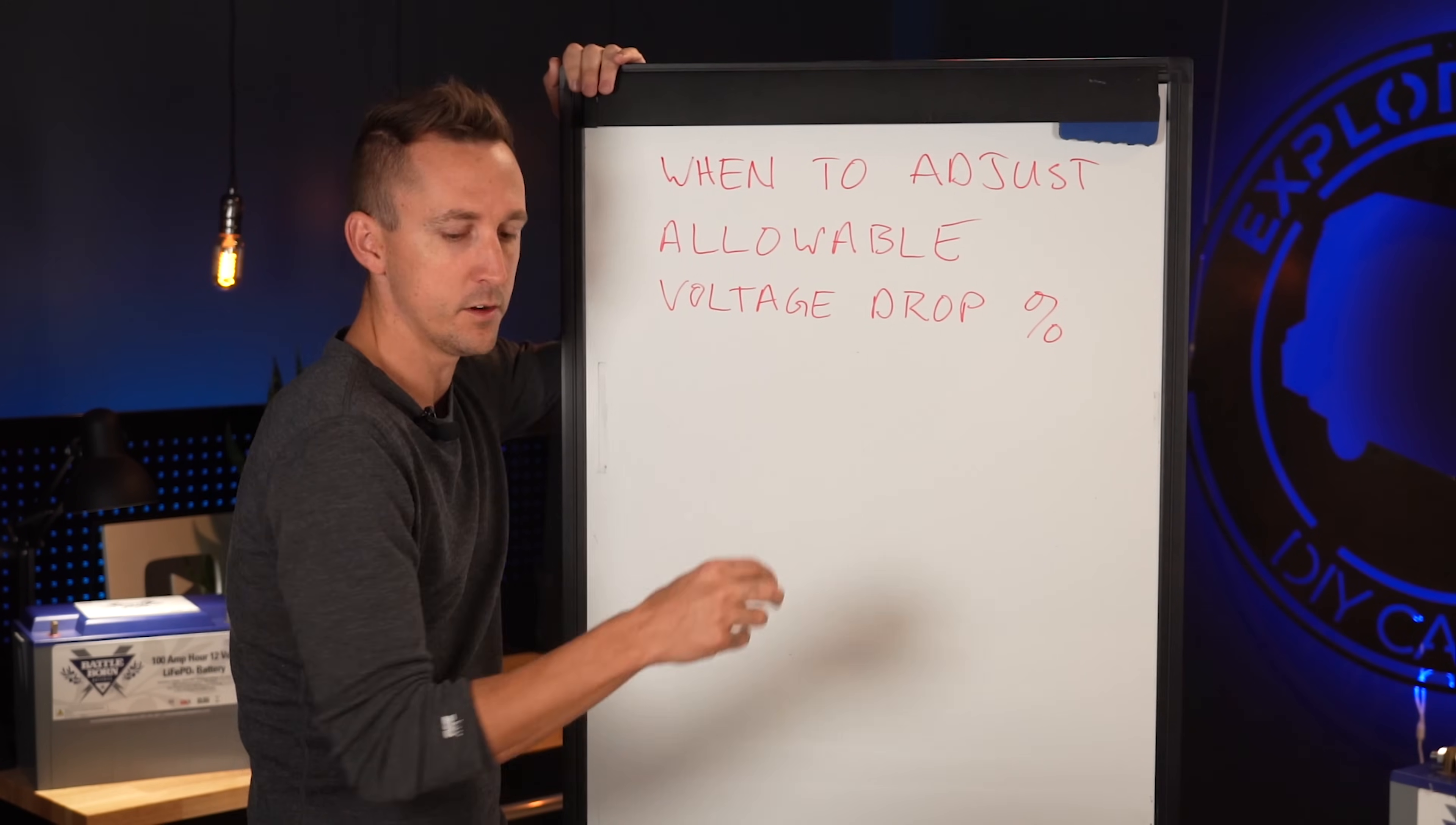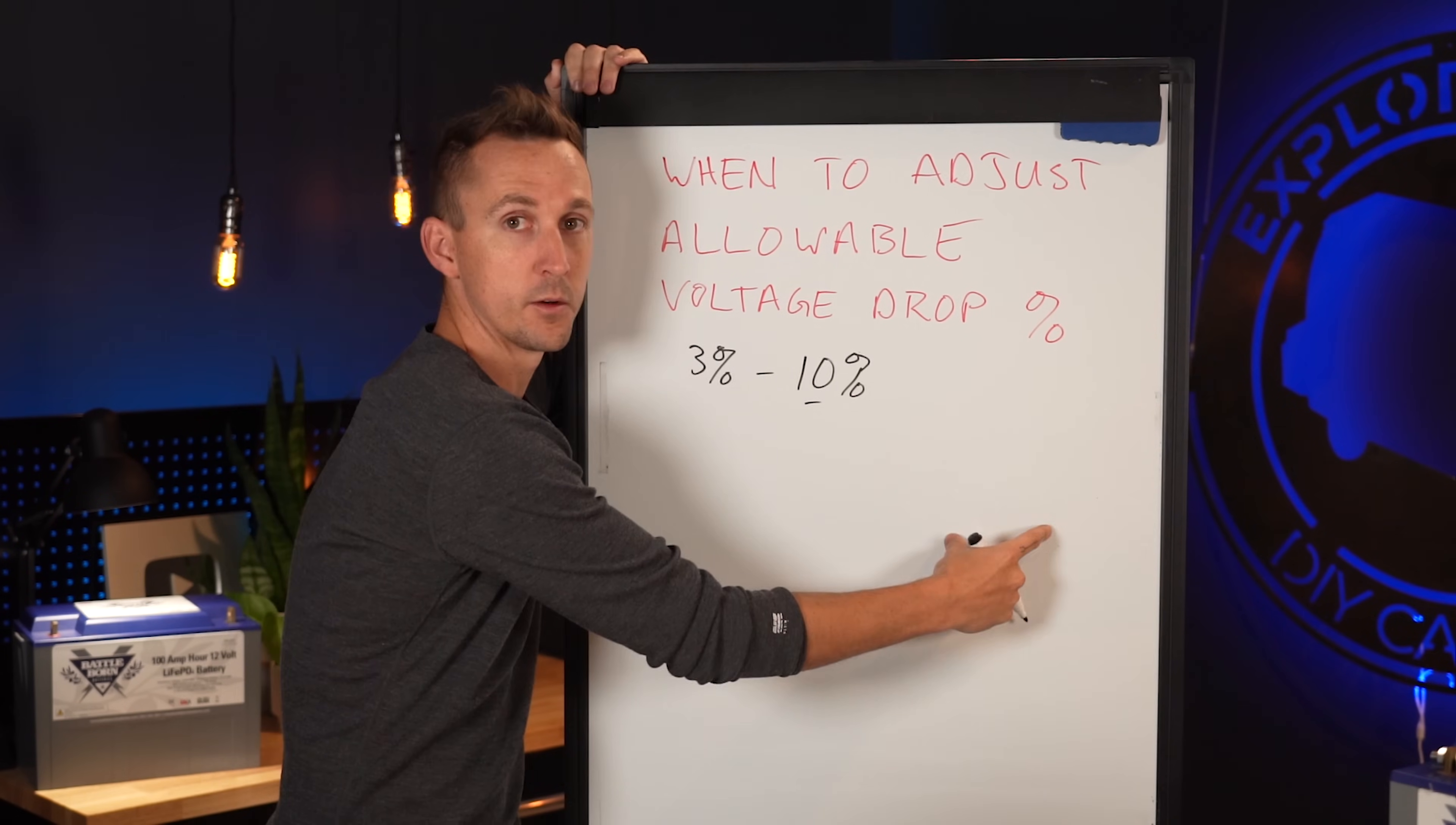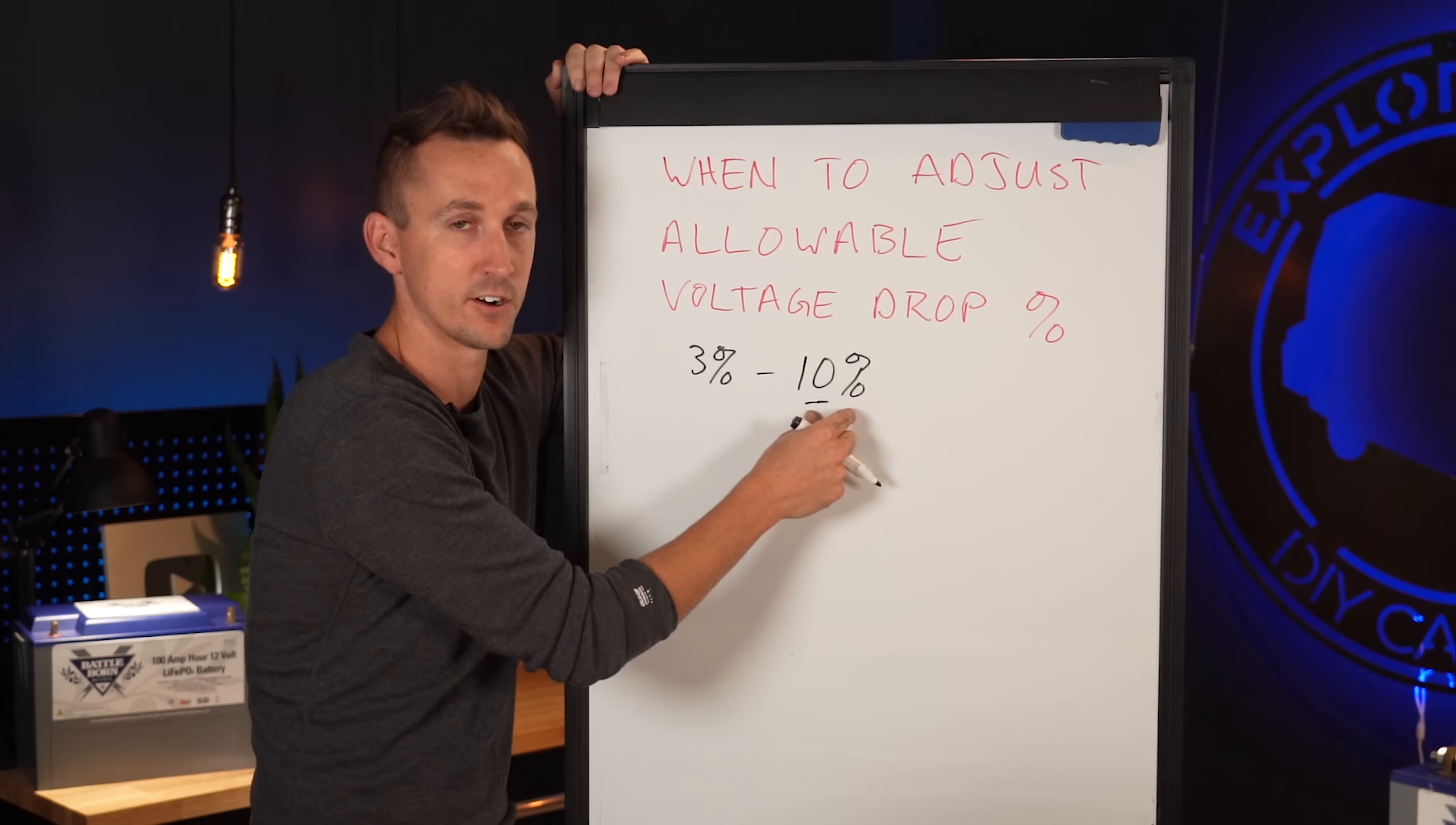So I like to operate between that 3% and 10% range, depending on what it is. If it's just lights, I'm going to be fine with being closer to the 10% mark, given that the lights are actually going to be able to be powered by our battery bank. So lights usually have a pretty broad voltage range that they work in. And so you're typically not going to run into issues with anything as long as you're staying under 10% voltage drop for lighting circuits.